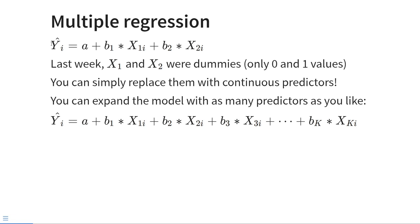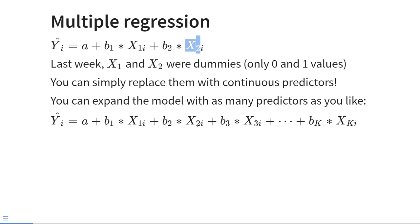Let's examine this regression equation. The individual predicted values for y, y-hat sub i, are equal to an intercept, plus the regression slope b sub 1 times the individual values on the first predictor x sub 1, plus a slope b sub 2 times the individual values on the second predictor x sub 2. We can continue expanding this model with as many predictors as we want, adding plus b times x up until k predictors, so the equation ends with plus b sub k times x sub k.